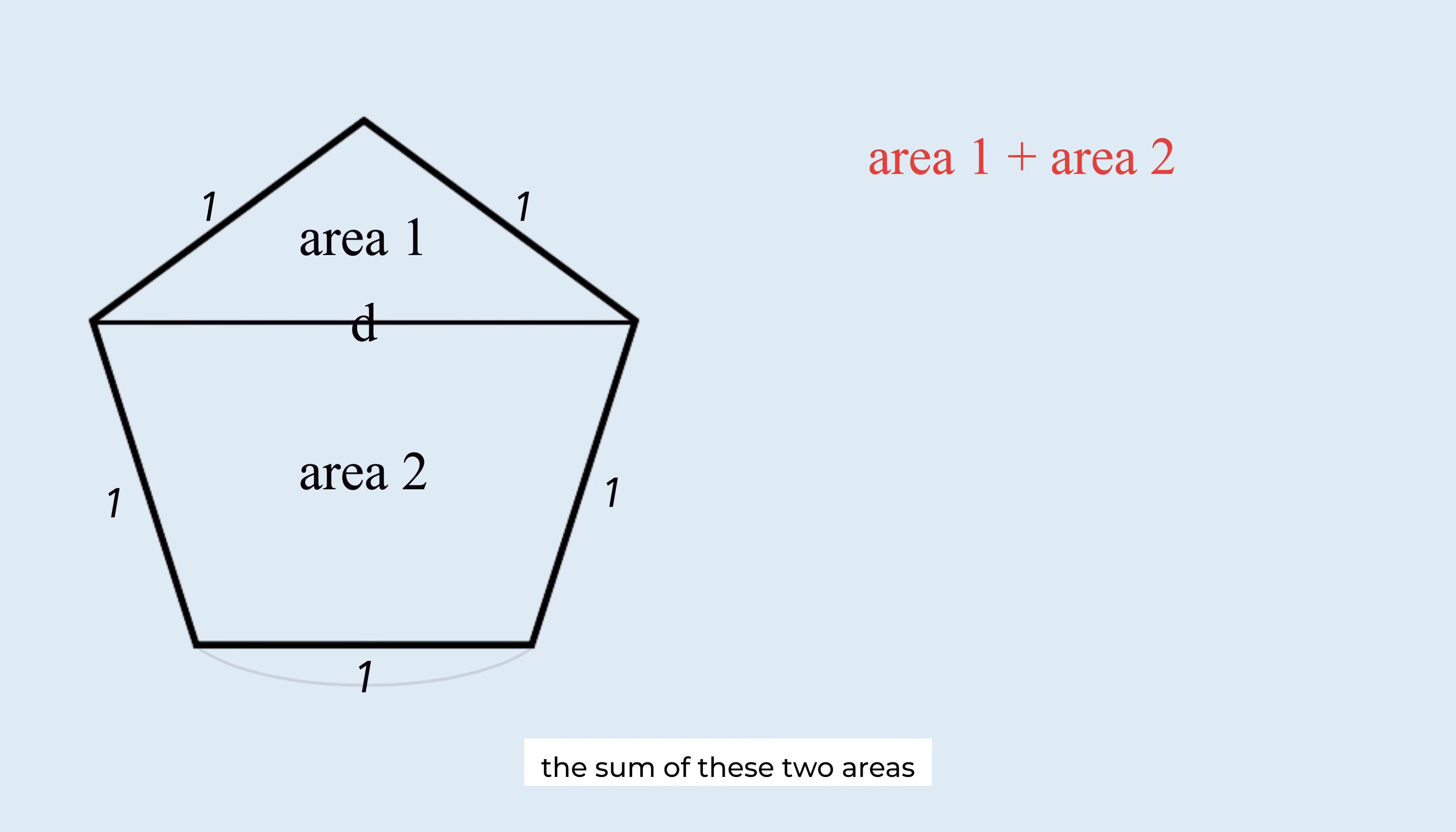The sum of these two areas is the area of this regular pentagon. Look at this. The area is expressed only in terms of the diagonal D. So we just need to find D.